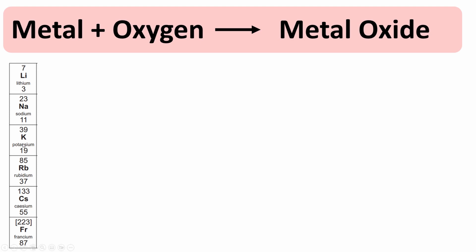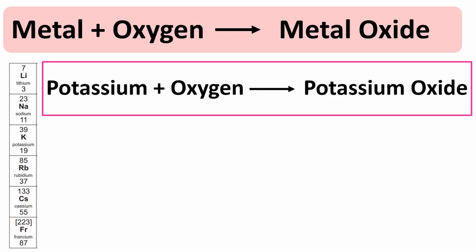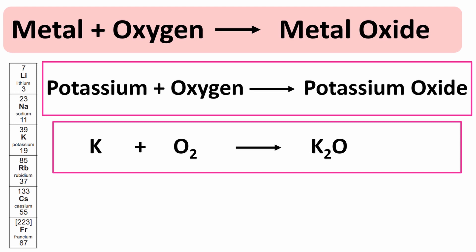Here's the word equation and the symbol equation but this is not balanced so we put a 2 there just like with the other ones and a 4 there to make it balanced and we include the state symbols. Potassium is a solid, oxygen is a gas, potassium oxide is a solid.